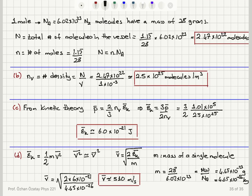From kinetic theory, the average pressure equals two-thirds times number density times average kinetic energy per molecule, giving an average kinetic energy of 6 × 10⁻²¹ joules. We then estimated the average speed per molecule using the average kinetic energy and the mass of a single molecule — obtained by dividing the molecular weight 28 grams by Avogadro's number — converting grams to kilograms carefully to get the answer in SI units: approximately 510 meters per second.